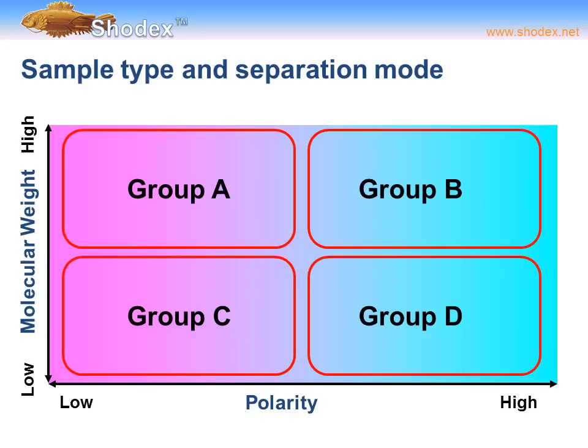We've separated the different types of compounds into four basic groups: A, B, C, and D. Group A is high molecular weight, low polarity. Group B is high molecular weight, high polarity. Group C is low molecular weight, low polarity. Group D is low molecular weight, high polarity. By breaking these into four groups, we can more easily identify the chemical or physical nature of the analytes and select the most proper and efficient column.